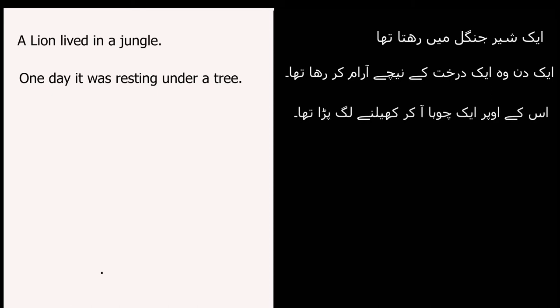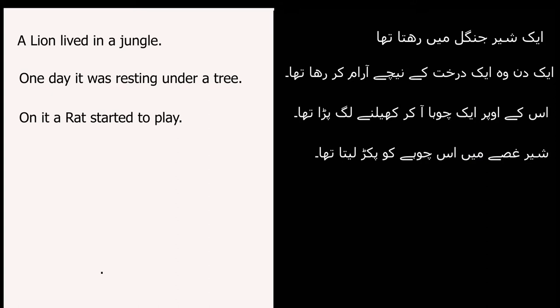The next sentence is: 'اس کے اوپر ایک چوہا آ کر کھیلنے لگ پڑا تھا' — 'لگ پڑا تھا' brings us back to past indefinite. So you say: 'On it, a rat started to play.' You simply change it to past indefinite without using any helping verb. The next sentence: 'شیر غصے میں اس چوہے کو پکڑ لیتا تھا' — 'پکڑ لیتا تھا' is obviously past indefinite again. So: 'In anger, the lion caught that rat.'